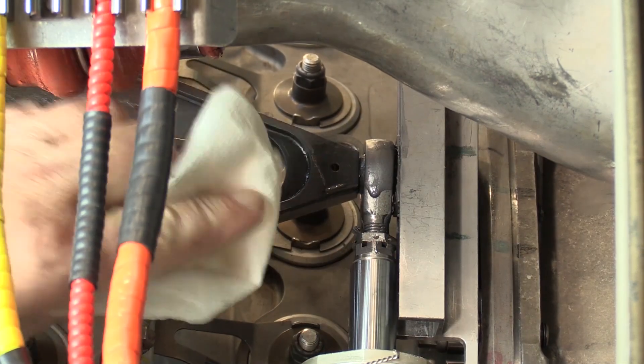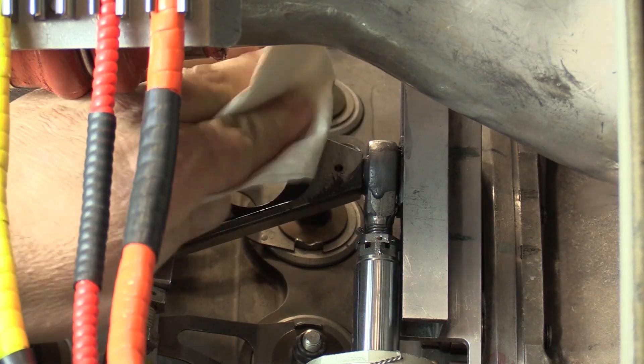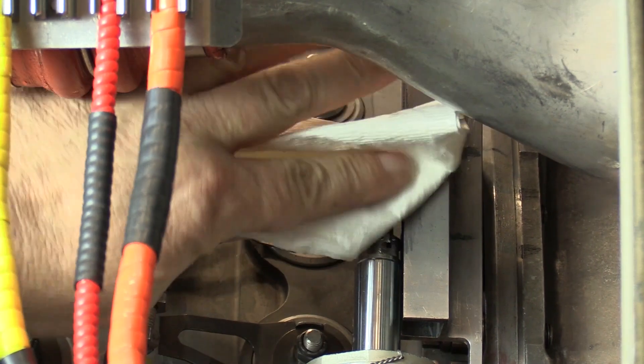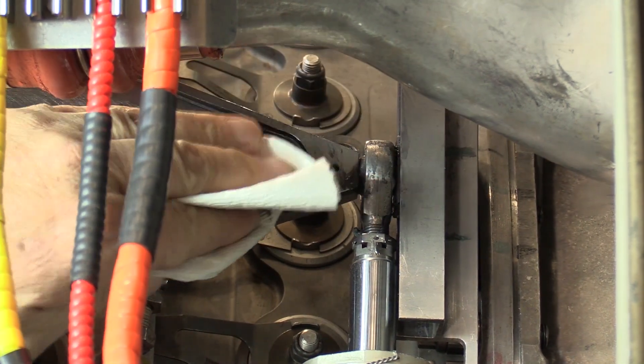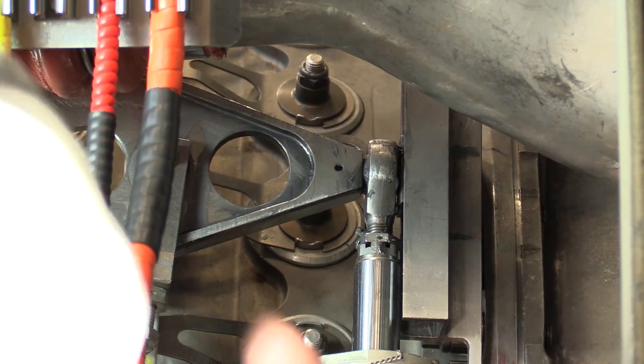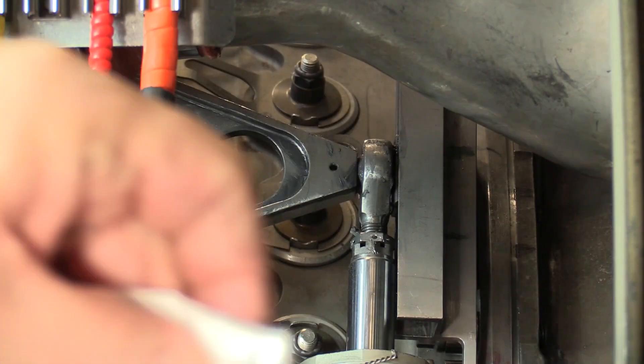I'm just going to get that excess lube off the master lever arm as much as I can, off the rest of the rod end. It's really not going to hurt anything. I'd just like to see a clean engine, so I'm going to get that excess lube off of there.